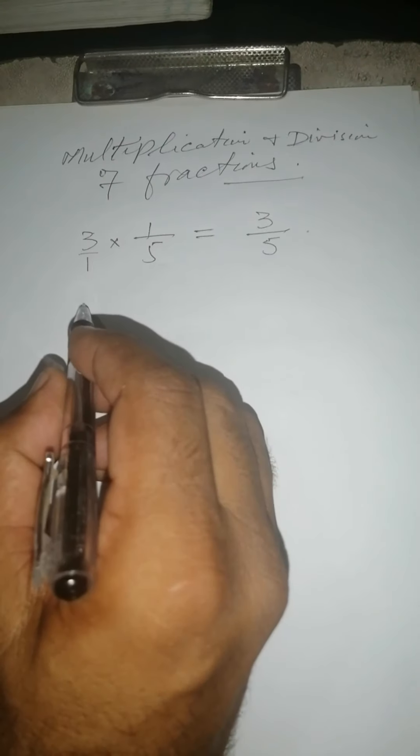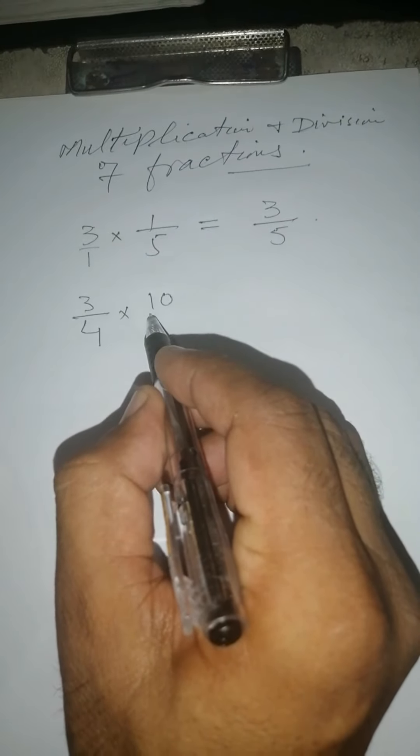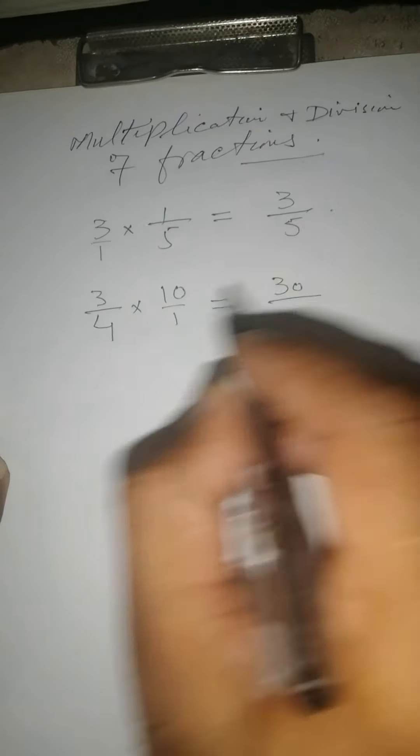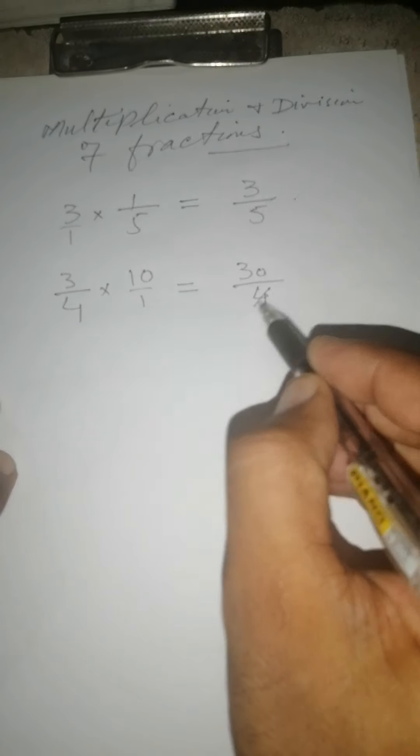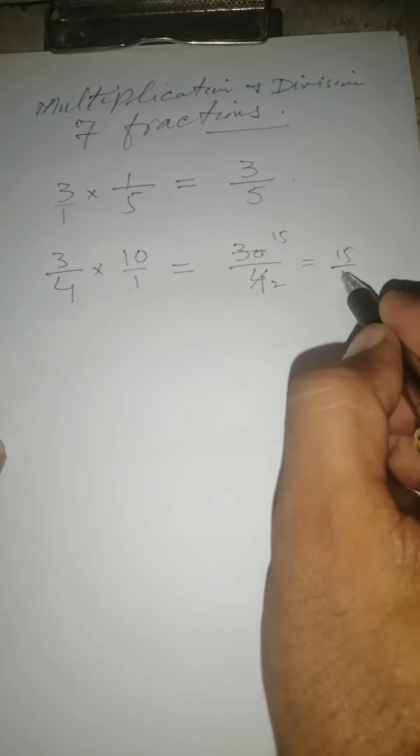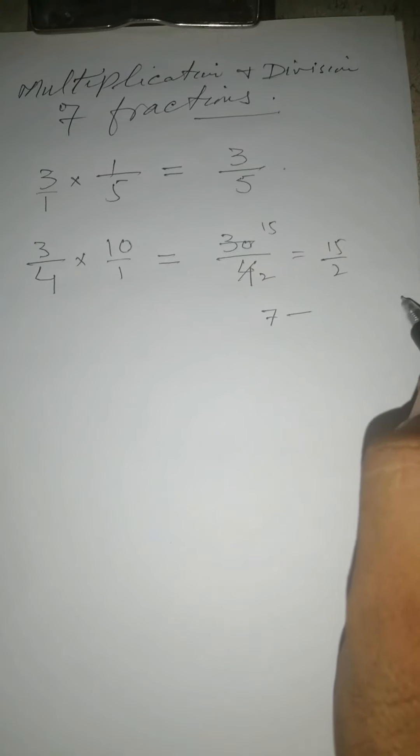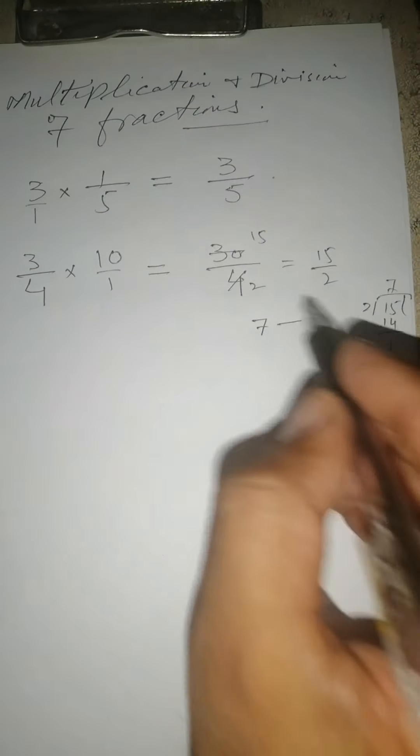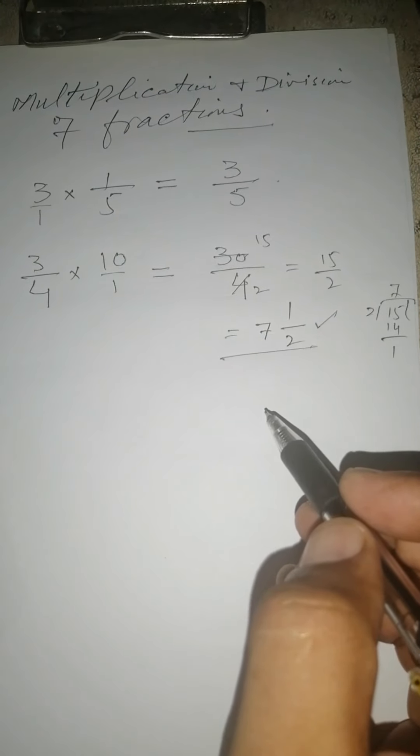Similarly, for example, here is another: 3 by 4 multiplied by 10. So 10 means 10 divided by 1. 10 times 3 is 30 divided by 4 times 1 is 4. Now simplification is possible. 2 into 4 and 2 into 30 gives 15. So that is 15 divided by 2. It can further be simplified. So 7 whole is 15 divided by 2: 7 into 14 leaves 1. So 7 whole 1 divided by 2. This is the final answer. So this is multiplication.